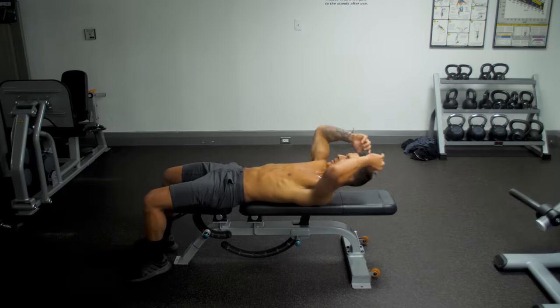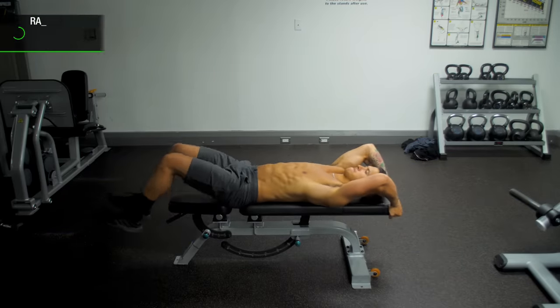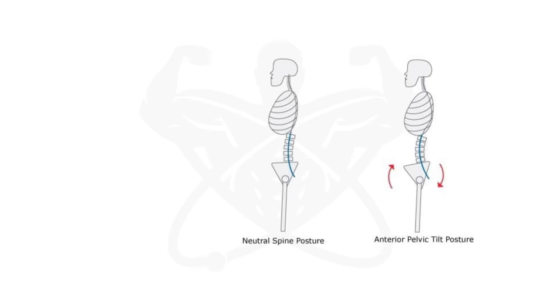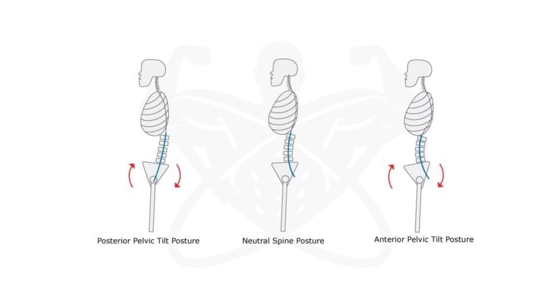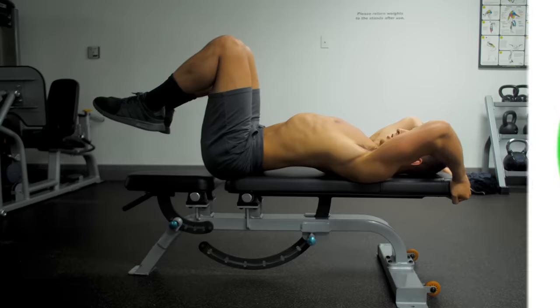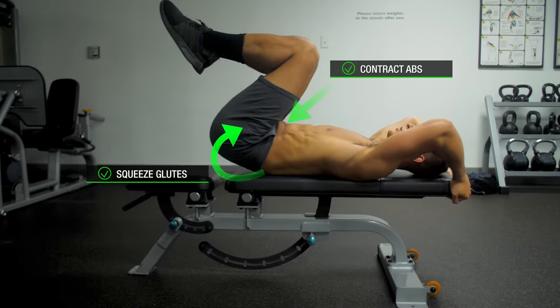First, lay on a flat bench or on the floor with your hands held behind the bench for support. Next, raise your legs up and bend to roughly 90 degrees. And from here, before starting the exercise, it's absolutely crucial that you initiate something called posterior pelvic tilt as pictured here. You can do so by squeezing your glutes and contracting your abs to tilt your pelvis upwards, which, as a result, is going to completely flatten your back onto the bench. And you want to maintain this posterior pelvic tilt throughout the whole movement.